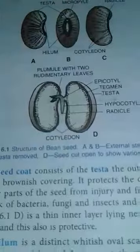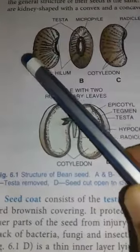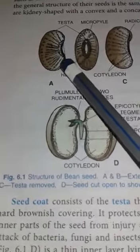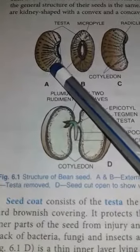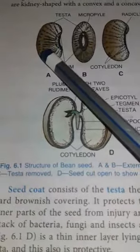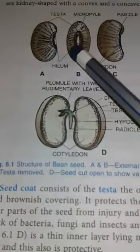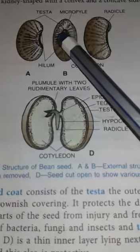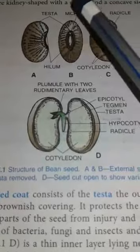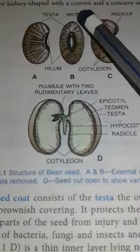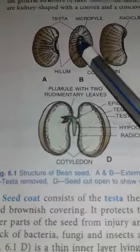Now we observe the basic structure of the bean. Bean is kidney-shaped. Here you can see the external features of the bean seed: testa, which is the outer layer; hilum, which is the old scar mark through which the seed is attached to the ovary with the help of the placenta; and micropyle, a small pore through which respiratory gas exchange takes place, especially O2, and through which water is also absorbed.